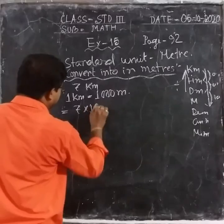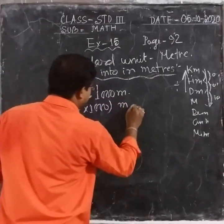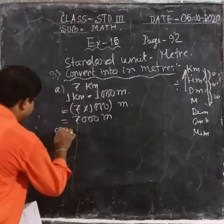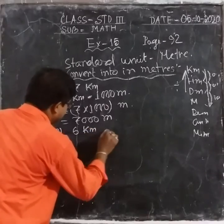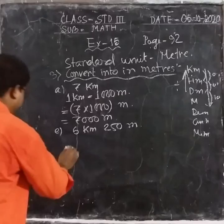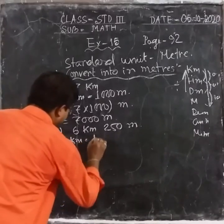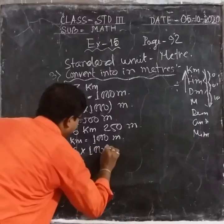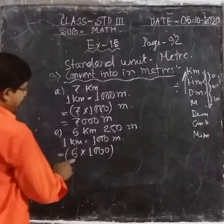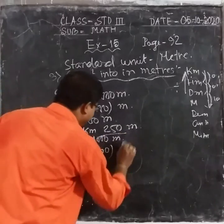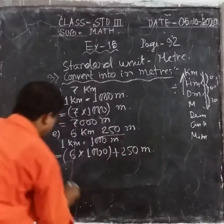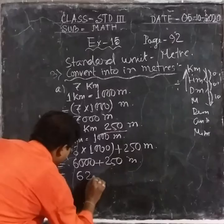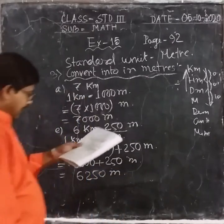Seven Kilometers: 7 × 1000 — convert it into Meter — that means Seven Thousand Meters. Another one: Question E — Six Kilometers 250 Meters. One Kilometer equals to One Thousand Meters. Six is in Kilometers, so multiply Six by One Thousand. The remaining meters will be added to it. Six Thousand plus 250 — the answer is Six Thousand Two Hundred Fifty Meters, that is 6250 Meters.